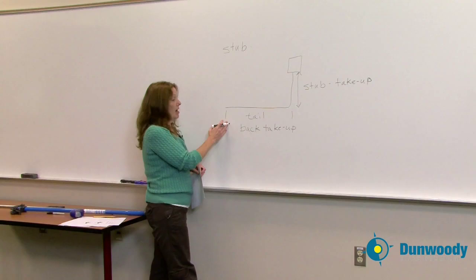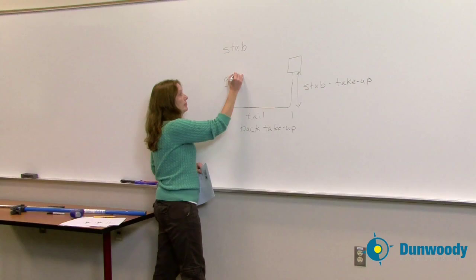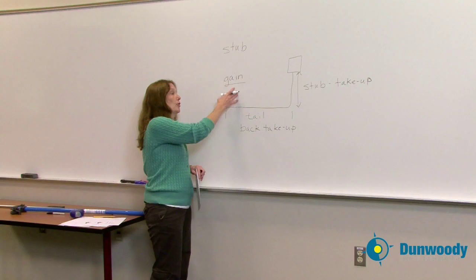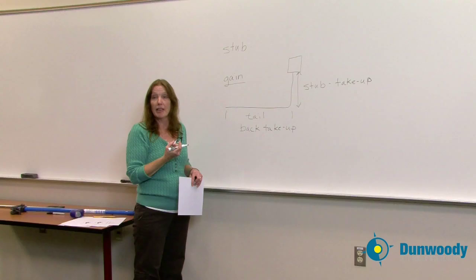The last one we have is what we call gain. Gain happens every time we make at least a 90 degree bend. Anything less than that, we lose some of our conduit length. But gain refers to when I do a full 90 degree bend, I'm going to actually gain some of the length I have.